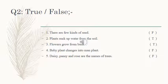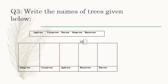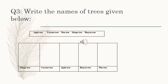Number 5: Daisy, Tansy and Rose are names of trees. It's false. Question number 3: Write the names of trees given below. There are some trees. Look at the pictures. You have to write the names of the trees. Number 1 is the picture of mango tree. The second picture is coconut tree. Then apple tree, then banyan tree, and then pine tree. Look at the pictures and write their names. Allah Hafiz.